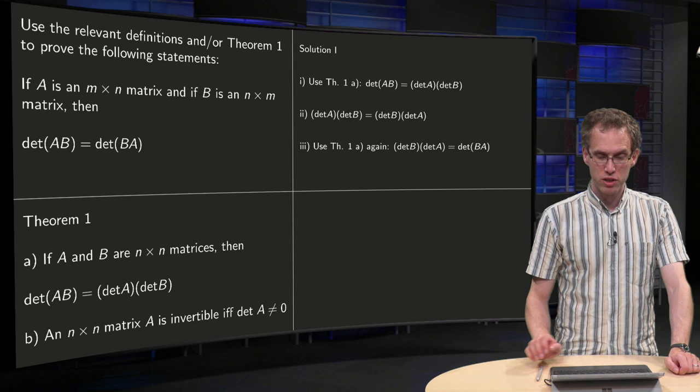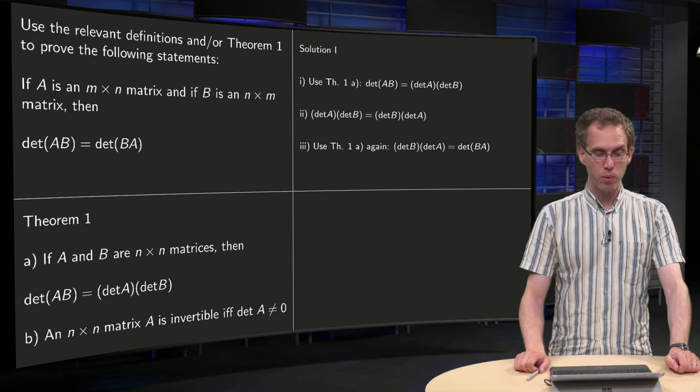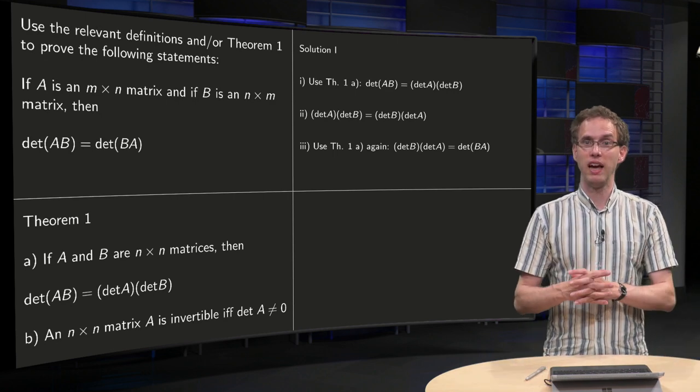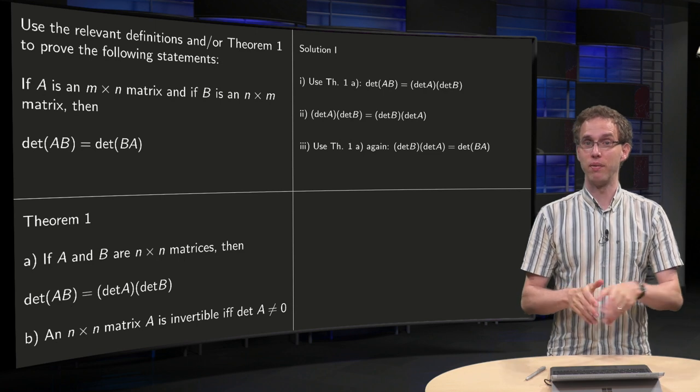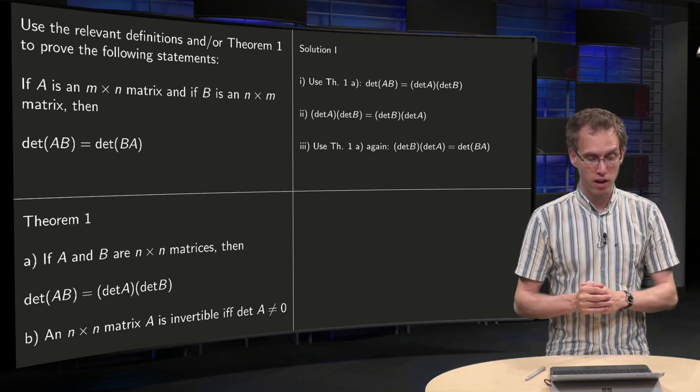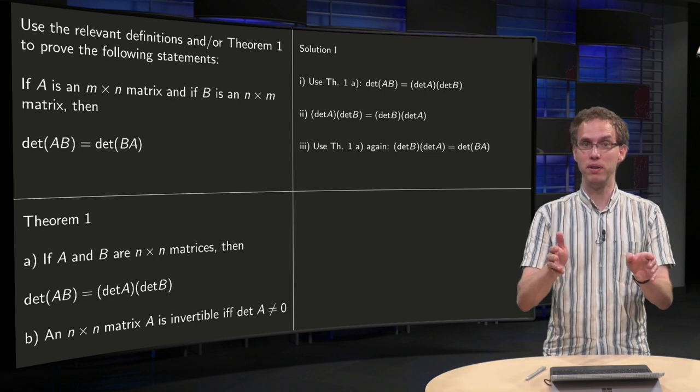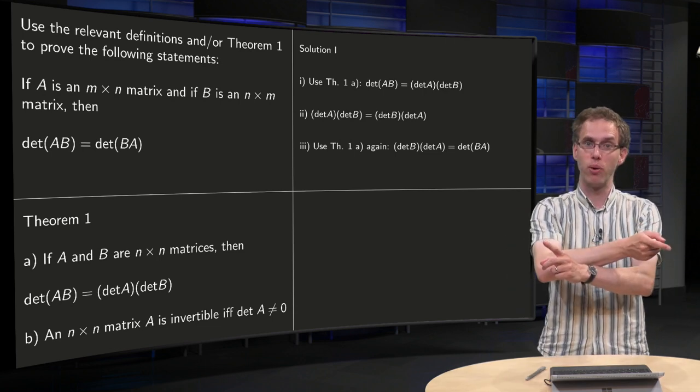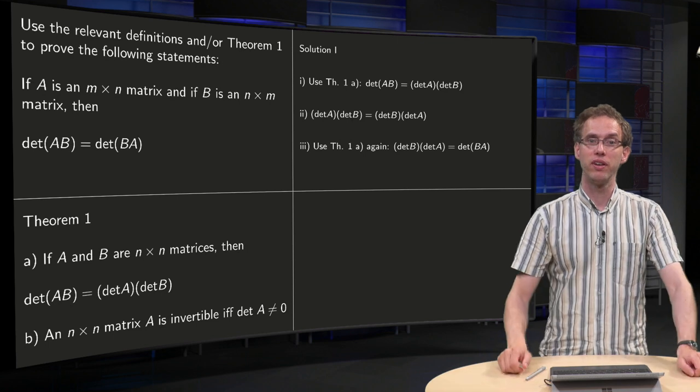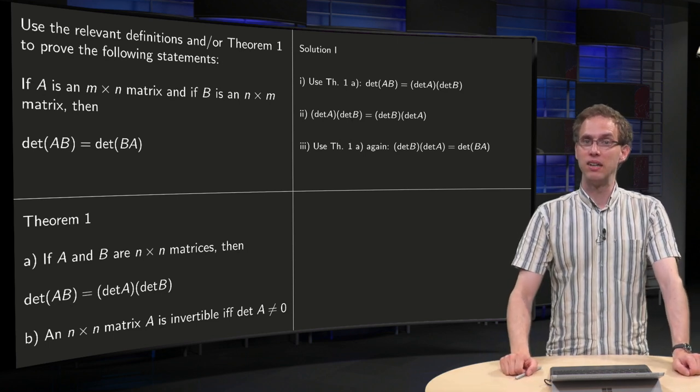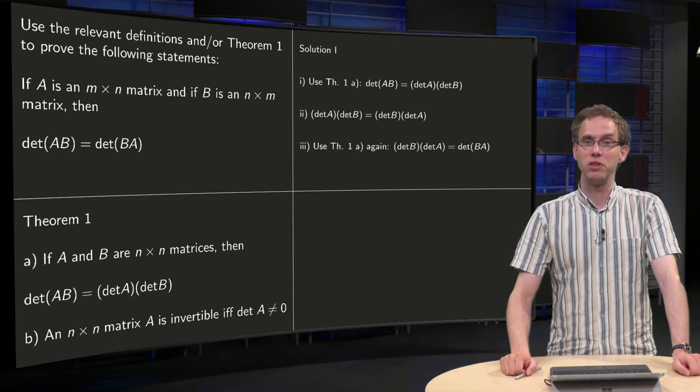So let's try. So what can we do? I will want to prove that det(AB) equals det(BA). Well, we could use the following idea. Basically we can use Theorem 1A, which says that det(AB) equals det(A) times det(B), then invert the order, and then use Theorem 1A again. So is that the correct solution in your opinion?